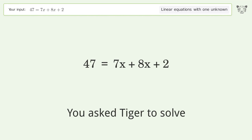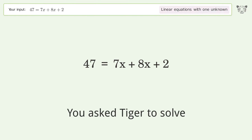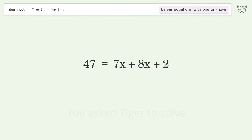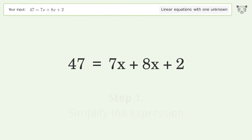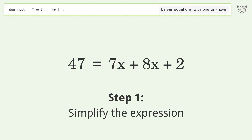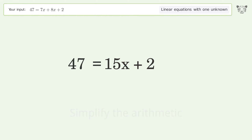Tiger is asked to solve a linear equation with one unknown. The final result is x equals 3. Let's solve it step by step: simplify the expression, simplify the arithmetic, swap sides.